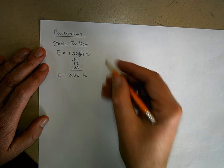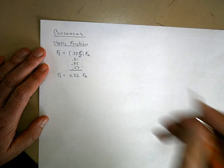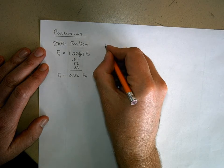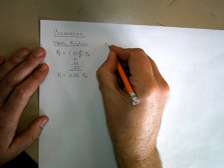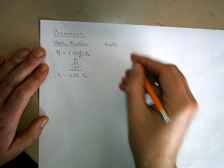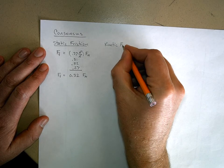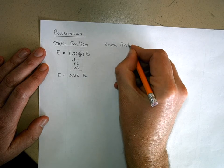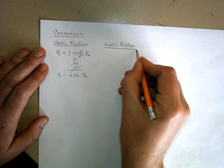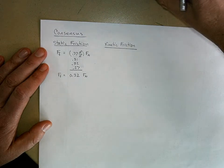The other groups did what's called kinetic friction — that is, the book was sliding across the table when you measured the force of friction. So let's talk about kinetic friction. The word 'kinetic' in physics means motion.